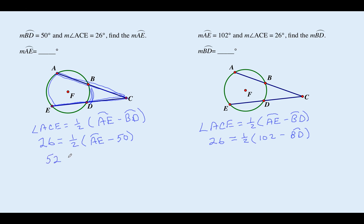Times both sides by two. They're all going to get solved the same. Add 50 to both sides. So this is 102 equals AE.